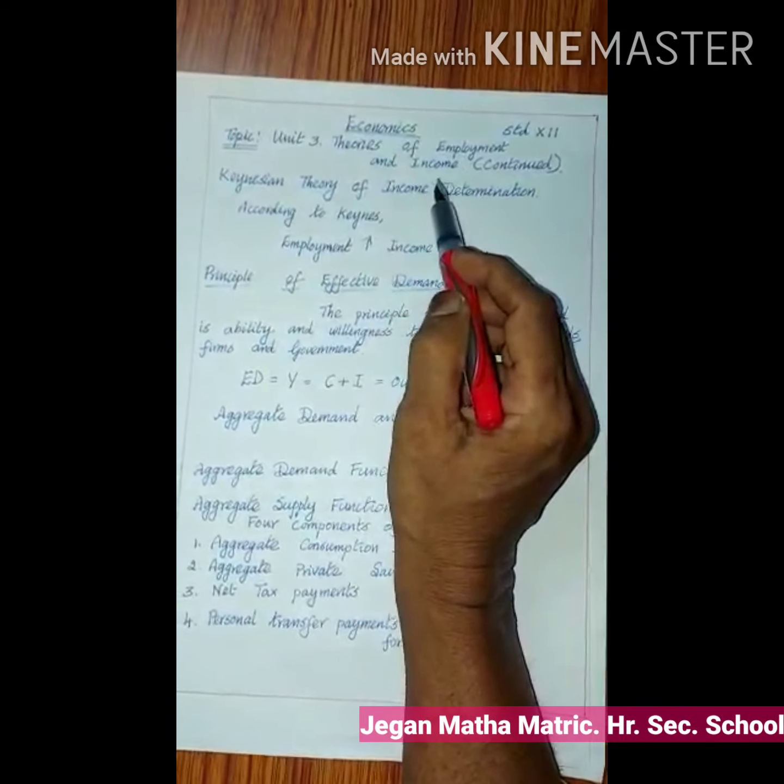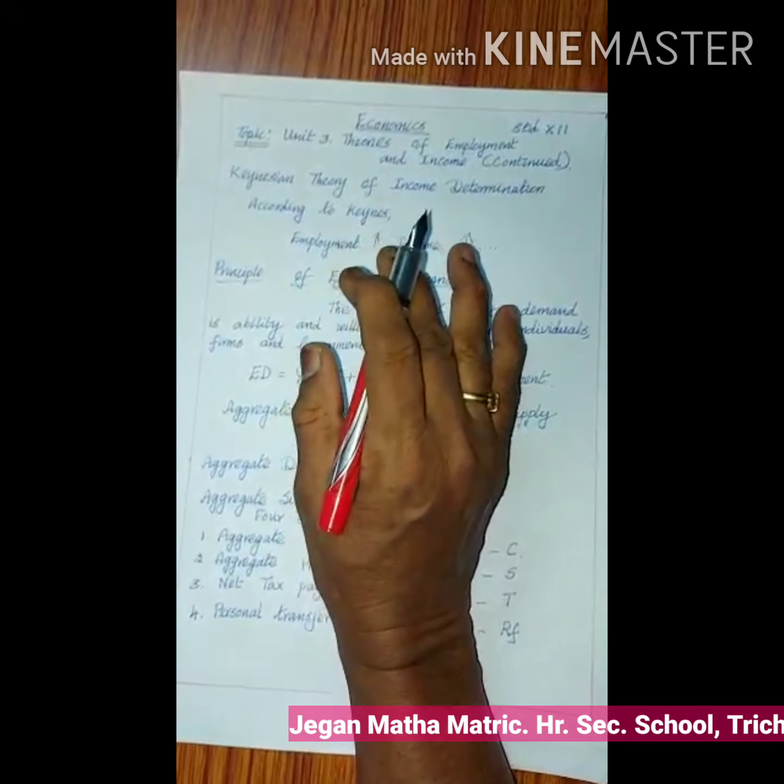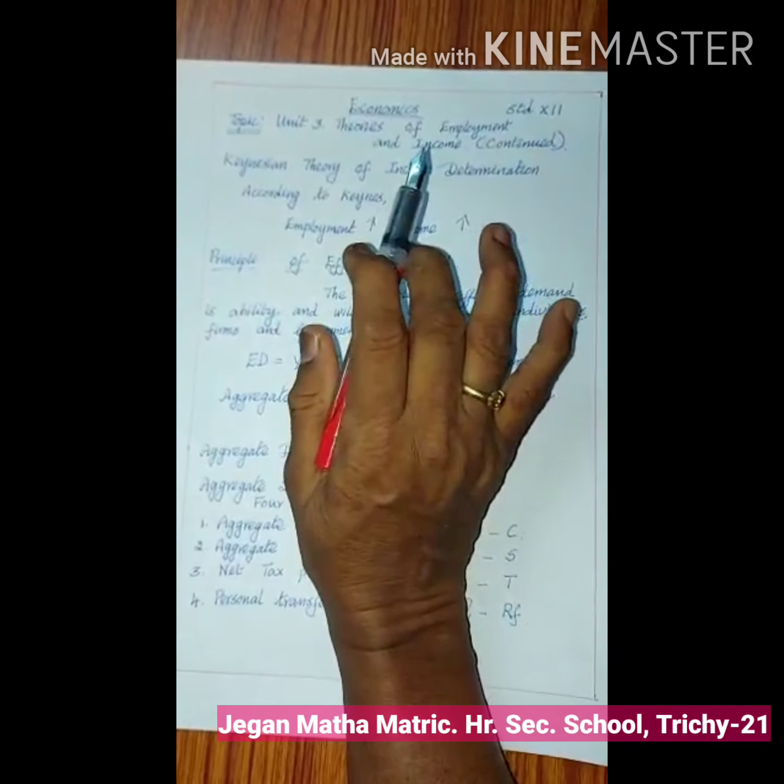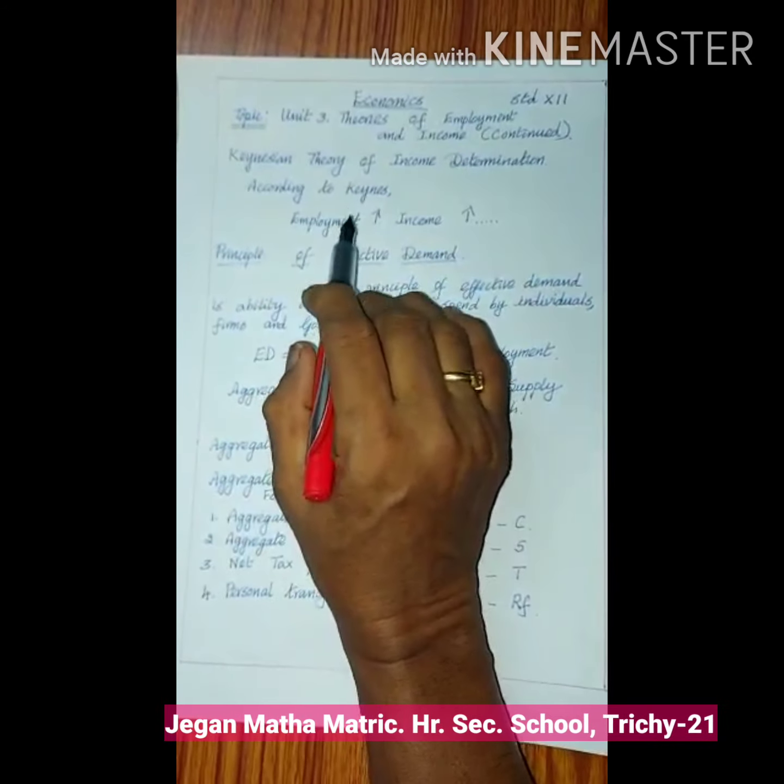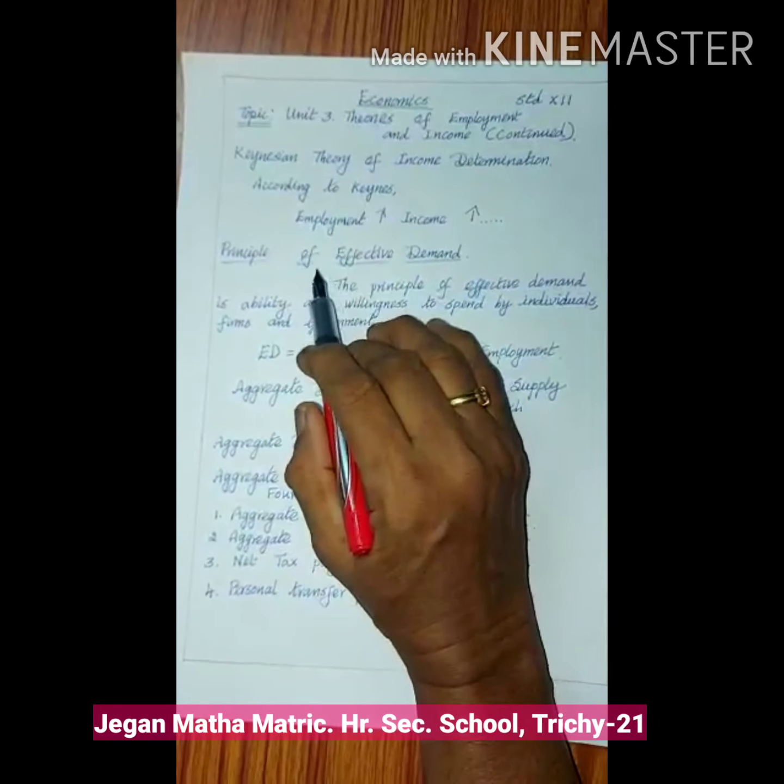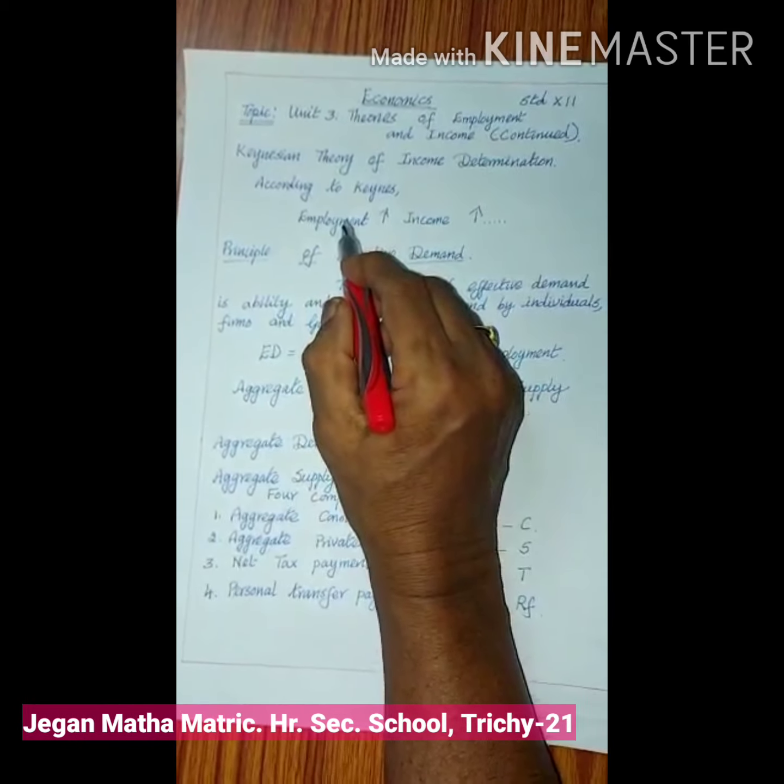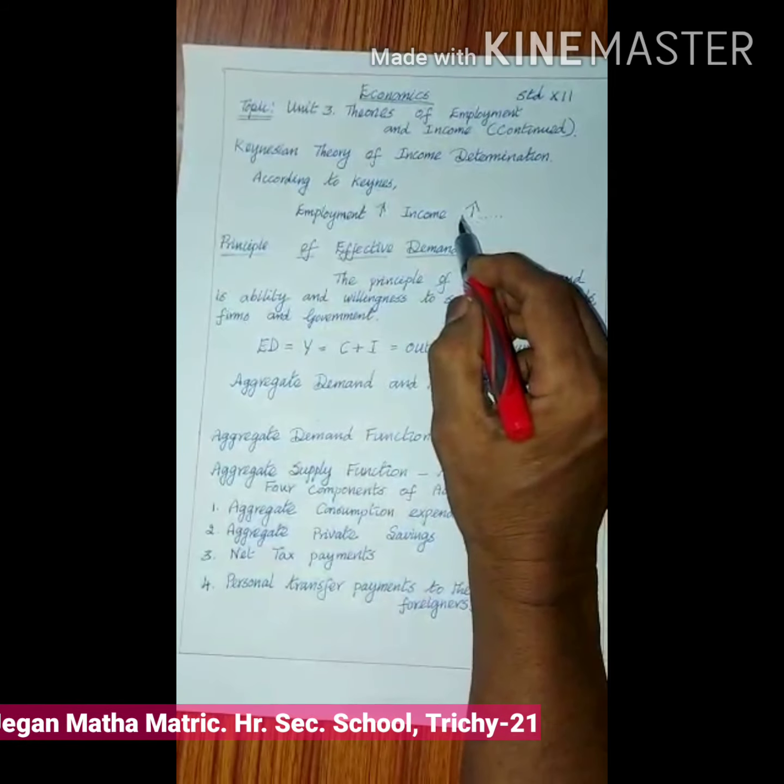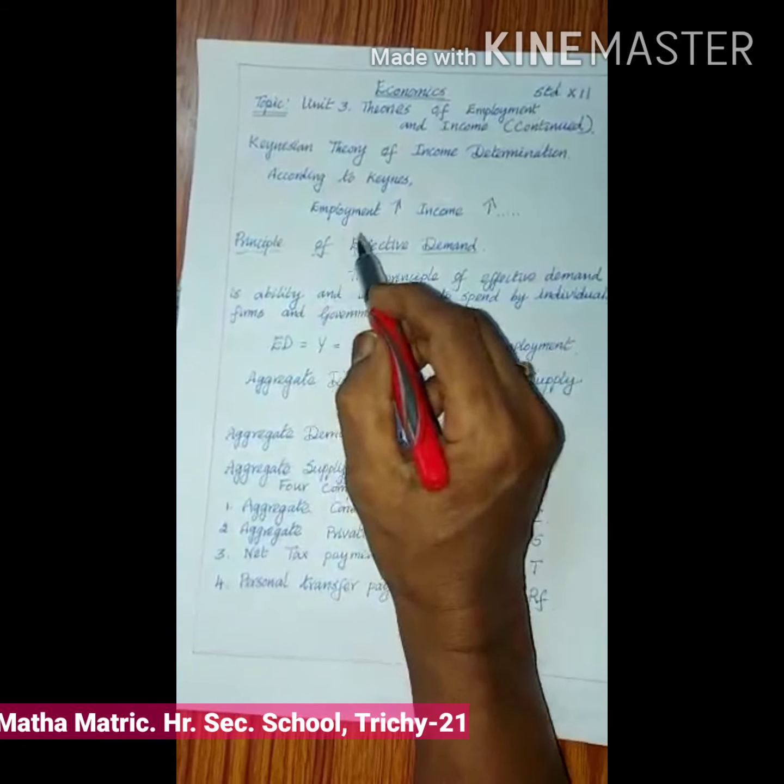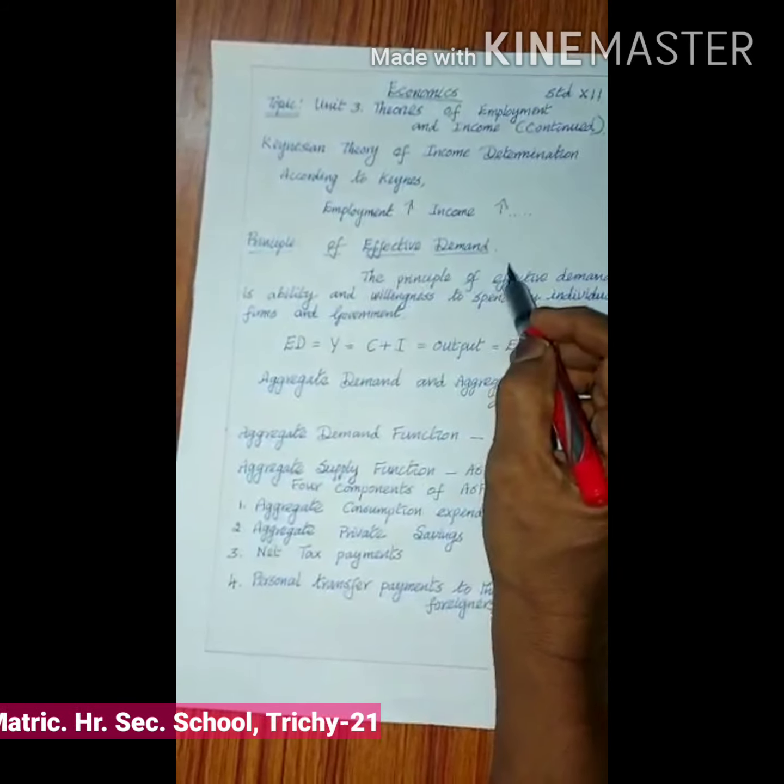Keynes brings out all the important aspects of income and employment in his simple theory. He believed that in the short run, the level of income of the economy depends on the level of employment. The higher the level of employment, the higher will be the level of income.